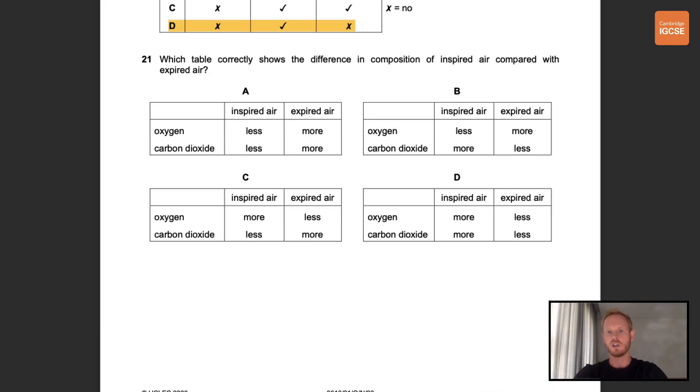Question 21. Which table correctly shows the difference in composition of inspired air compared with expired air? So all this question requires you to know is that the air we breathe in, inspired air, contains more oxygen and less carbon dioxide than the air we breathe out. And this is because oxygen is used up by aerobic respiration in the body, and carbon dioxide is released as a by-product.